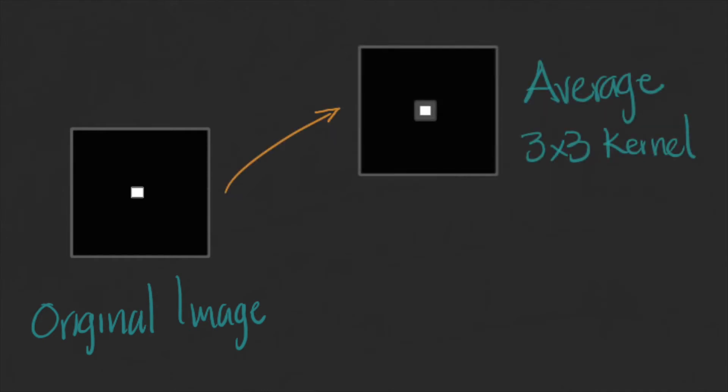However, the blurring that we can obtain by averaging pixels on the kernel is different from the blurring that we can have from a camera.